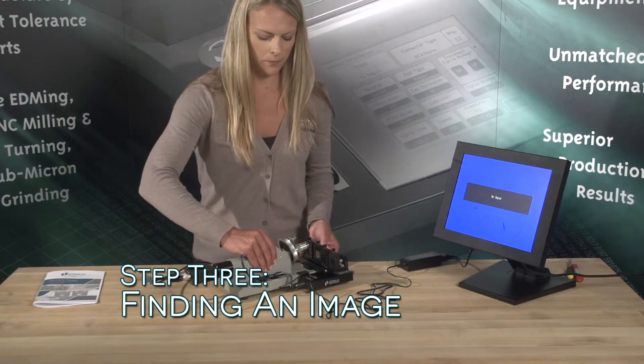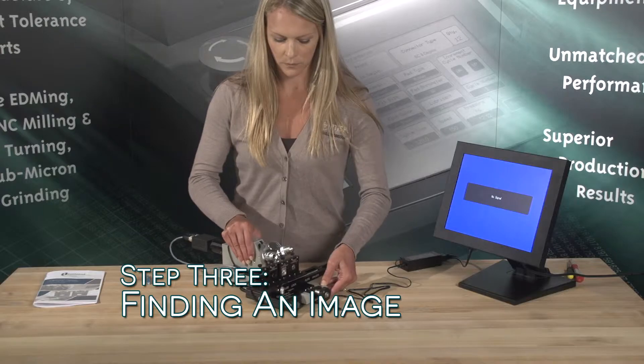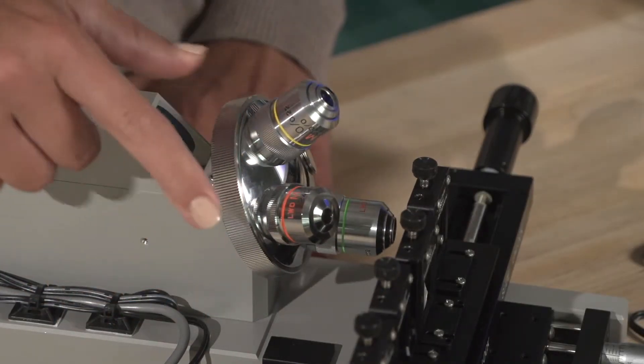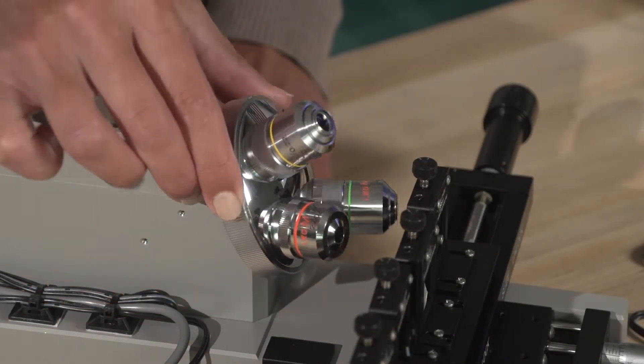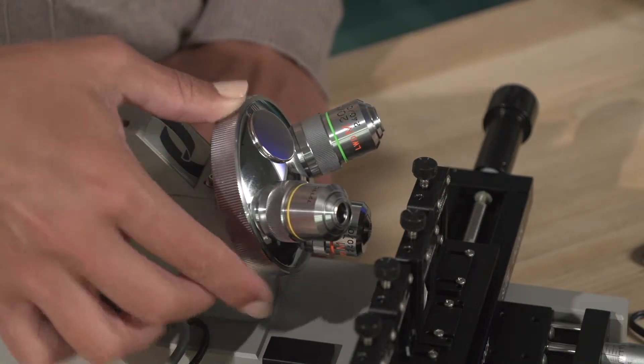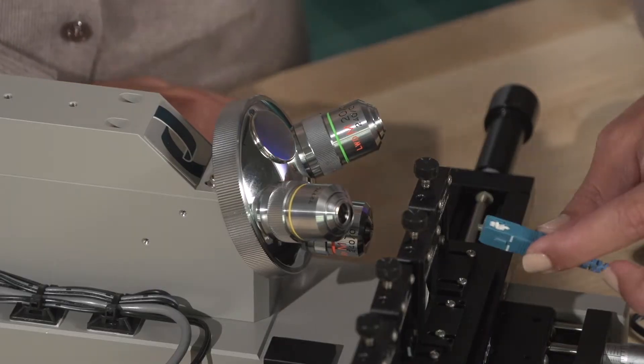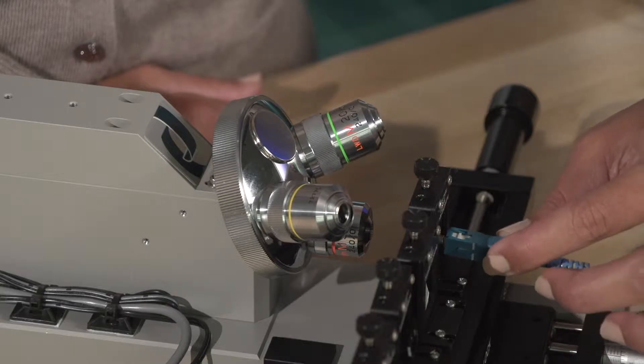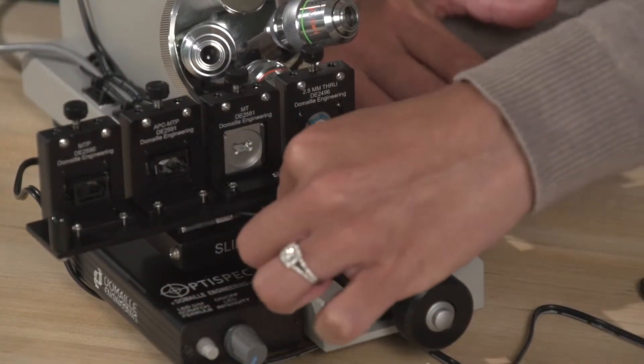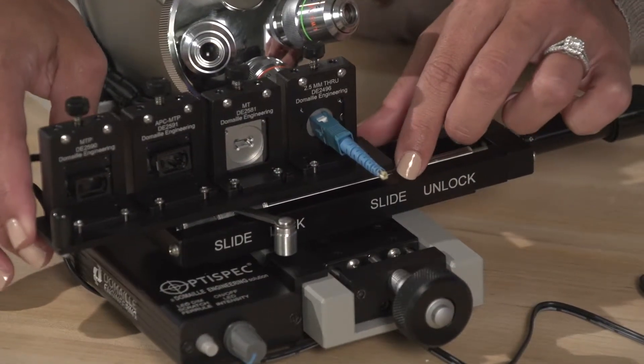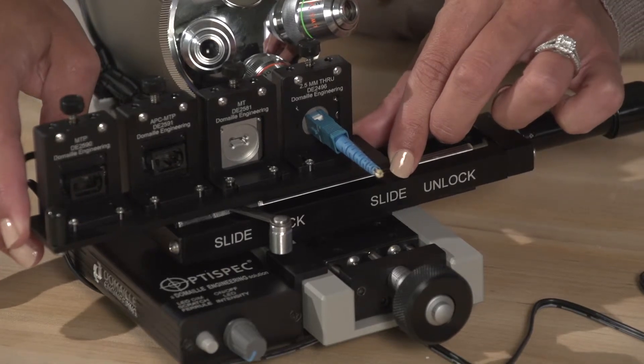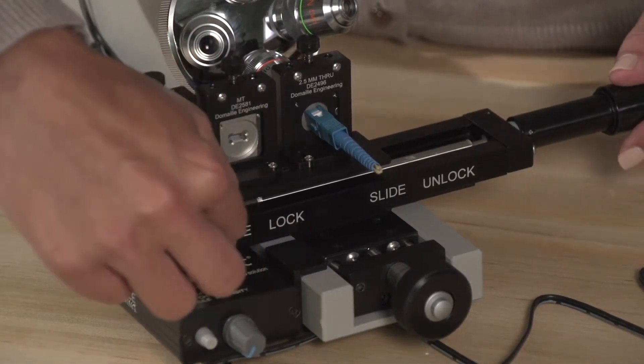Step 3: Finding an Image. Turn the objective turret so that the 5X objective, indicated by a red line on objective lens, is at the 6 o'clock bottom position. Place a fiber connector in the appropriate adapter. Unlock the Velmec slide and move the adapter position so it is in line with the objective, and re-lock the Velmec slide.